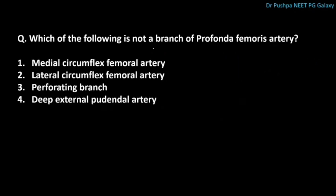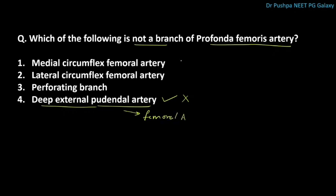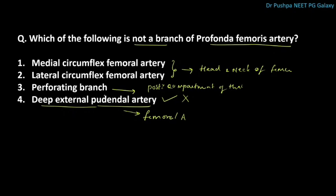Which of the following is not a branch of the profunda femoris artery? The correct answer is the deep external pudendal artery, which is a branch of the femoral artery. The medial and lateral circumflex femoral arteries supply the head and neck of the femur, while the perforating branches supply muscles in the posterior compartment of the thigh. The profunda femoris is also a deep branch of the femoral artery.